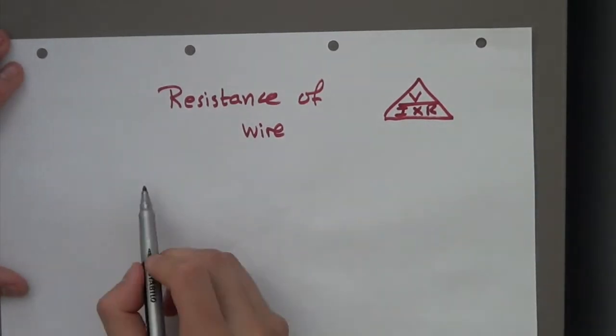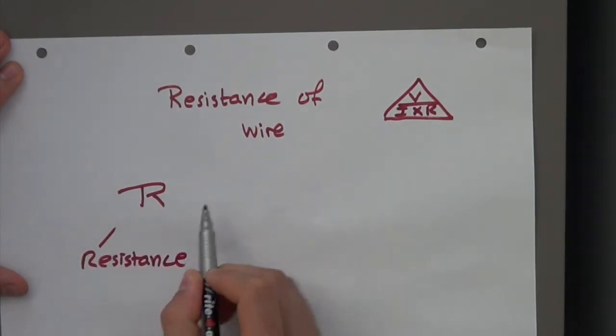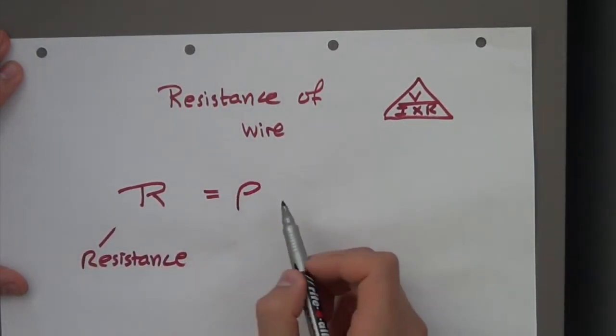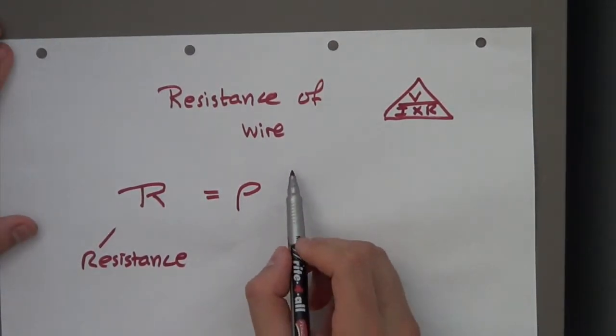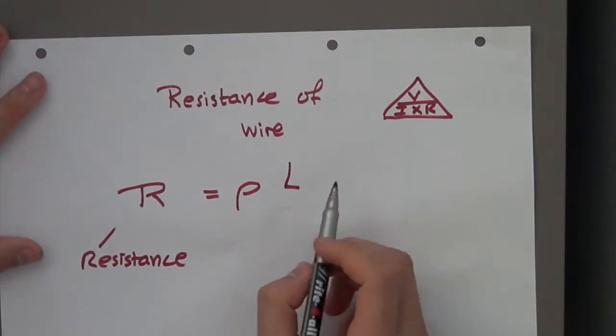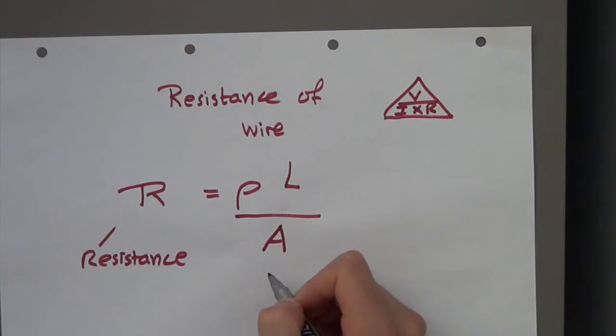But what is it? So R, resistance, we can write it as this weird symbol, resistivity rho - it's a Greek symbol - times a certain amount of length of a particular material divided by its cross-sectional area.